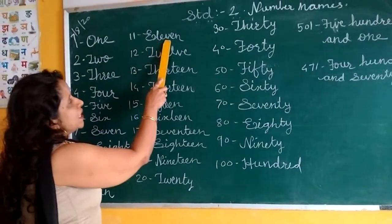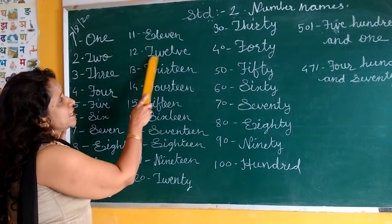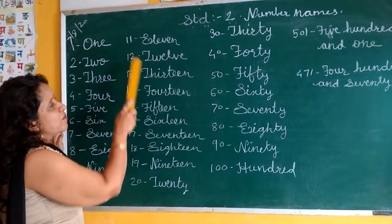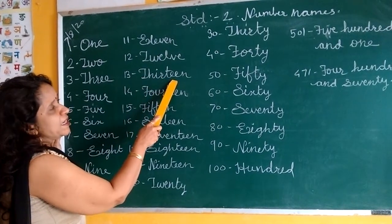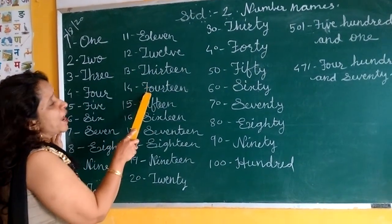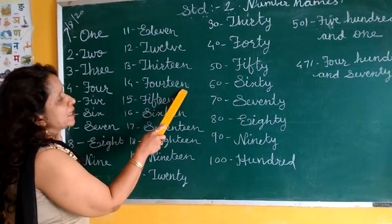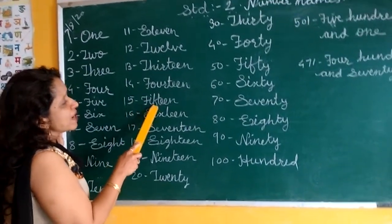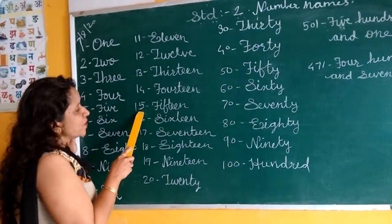E-L-E-V-E-N, 11. T-W-E-L-V-E, 12. T-H-I-R-T-E-E-N, 13. F-O-U-R-T-E-E-N, 14.